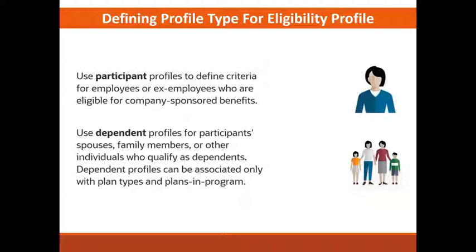Then we have what are called the dependents. These are used for the participant's spouse, family members, or other individuals who qualify as dependents. So when we define an eligibility profile, we have to select the type of profile we are defining. There are two types that exist: the participant and the dependent.